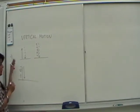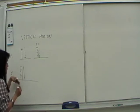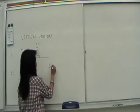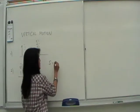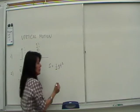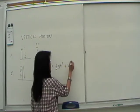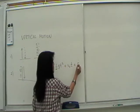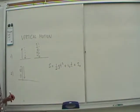So we noted that for these situations we have the equation for S. It's always going to be a half gt squared, plus initial velocity, if there is any, times t, plus the initial position S sub 0.